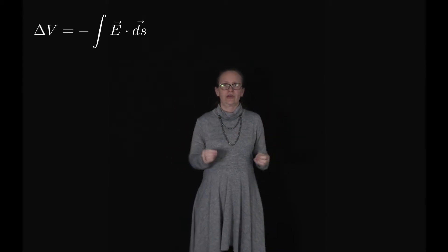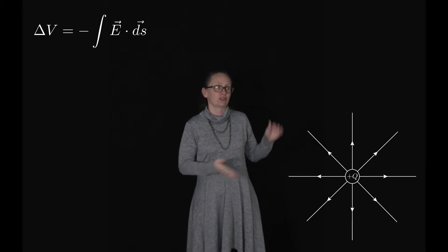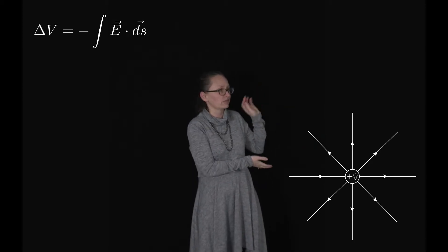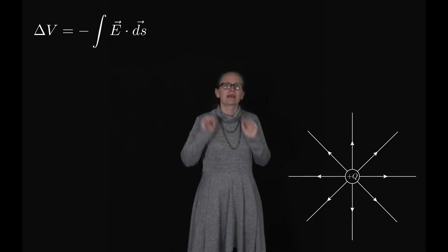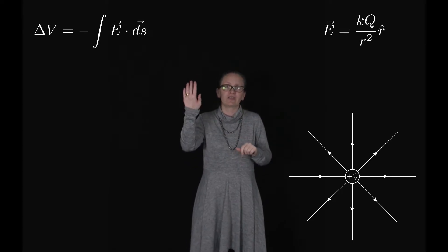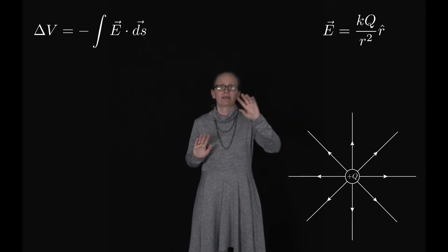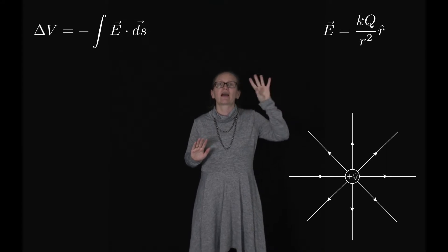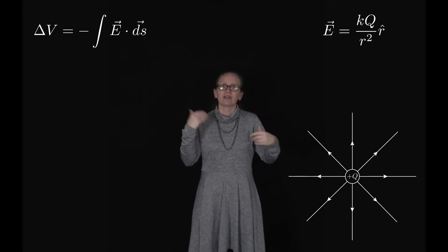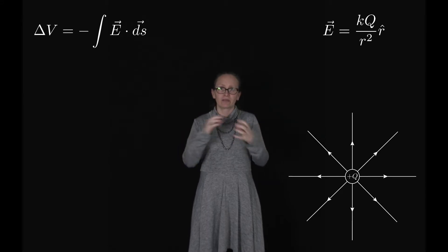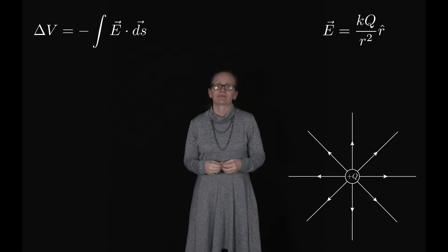We already know how to describe the electric field around a point charge. For a point charge +Q, the electric field is E = KQ/R² times R̂, where R̂ is the radial unit vector. It contributes the direction pointing out from the point charge but no magnitude to this expression.